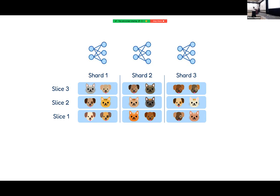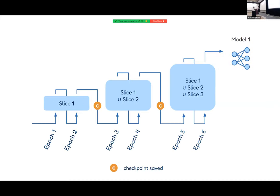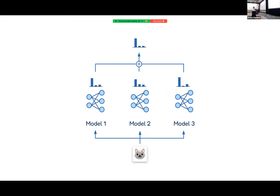On each shard you train one model. You start with a random initialization and train for some number of epochs on slice one, then save your model weights, then train on slices one and two, save again, and so on until you've trained on the entire shard. The reason for this is that if someone represented in slice three asks for their data to be deleted, you don't have to start from the beginning — you can use the second checkpoint and only repeat those epochs.